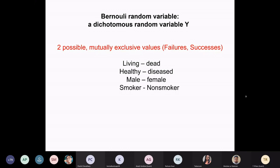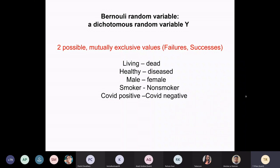Healthy or deceased. Male or female. These are dichotomous variables. Smoker or non-smoker. COVID positive or COVID negative — you have to be positive or negative, there is no other way in between. These are dichotomous variables that can be tested with a binomial distribution.